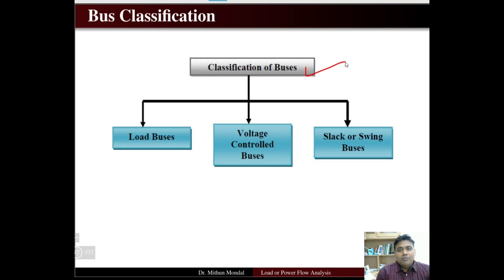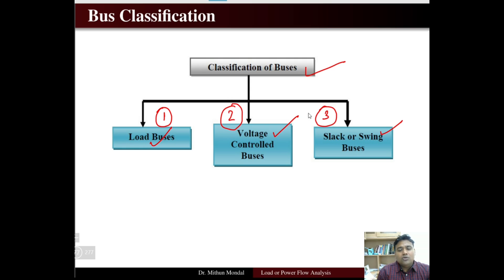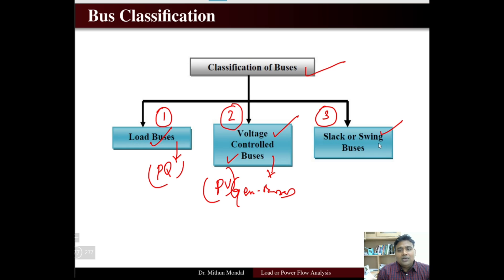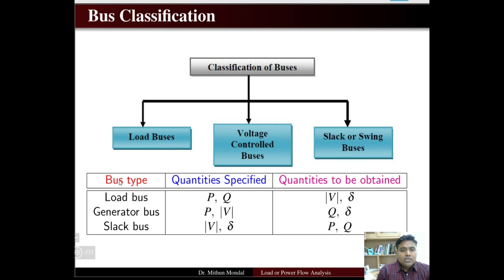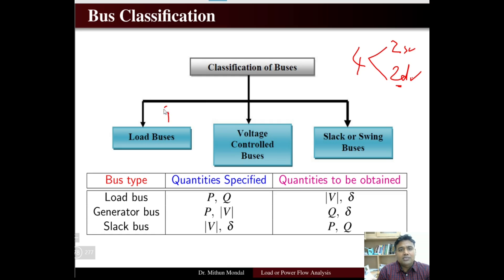Generally, buses are classified into three types: load bus, voltage control bus, and slack or swing bus. Voltage control buses are known as generator buses, and generator buses are known as the PV bus or voltage control bus. Slack or swing buses are basically the reference bus. Out of the four quantities, two will be specified and two have to be determined corresponding to each of these three bus types.